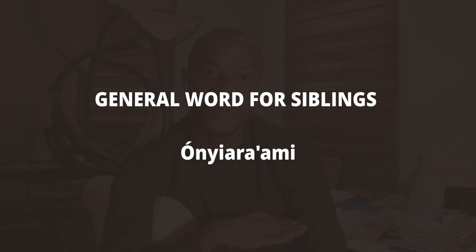'Enebenami' and 'onezami' are used for the elder sibling — that is elder brother and elder sister respectively. For your younger siblings, there is a general word: 'orinyarami.' This is a general word for siblings of any gender who are younger than you. So to call my elder brother I say 'enebenami,' elder sister 'onezami,' but younger brother or younger sister I simply say 'orinyarami.'